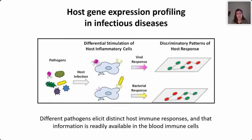For example, you can see in this graph how the viral response and the bacterial response are unique and different, and can allow us to use the expression of genes as a means of diagnostic use. This information is readily available in blood immune cells.